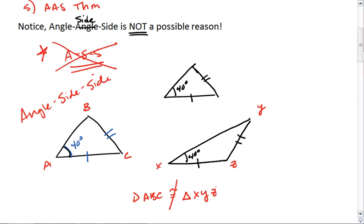It still doesn't make the triangles themselves congruent. So Angle-Side-Side is not a possible reason.